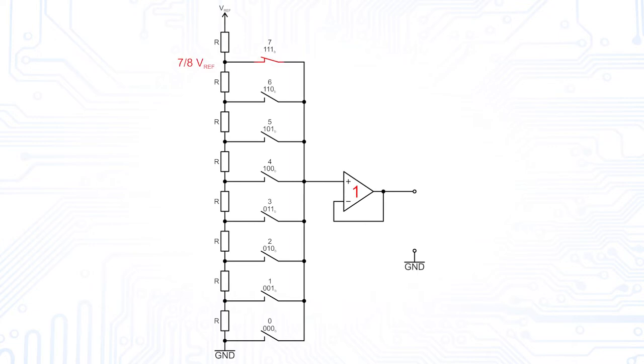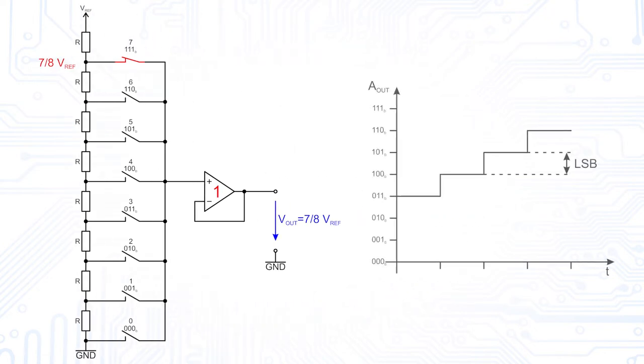In this example, the full-scale code of a string DAC produces an output of VREF minus 1 LSB. LSB is the acronym of least significant bit and describes the smallest output change that can be resolved by the DAC.